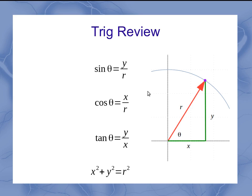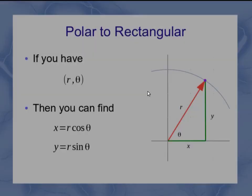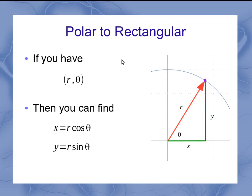Now that we have those basic equations, we can rearrange them to find individual values. If I've got polar coordinates r theta and want to find rectangular coordinates x and y, I rearrange the sine and cosine formulas: x equals r cosine theta, and y equals r sine theta. Remember, sine dealt with the opposite side, so it associates with y, and cosine dealt with the adjacent side, so it associates with x.